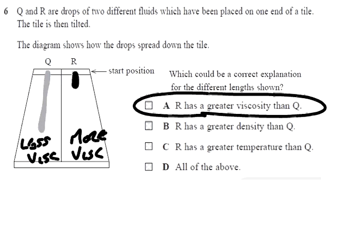Q and R are two drops of different fluids which have been placed at one end of a tile and the tile is then tilted. The less viscous one is going to run further and the more viscous one is going to run a shorter distance. So R must have more viscosity than Q, and so answer A is correct.